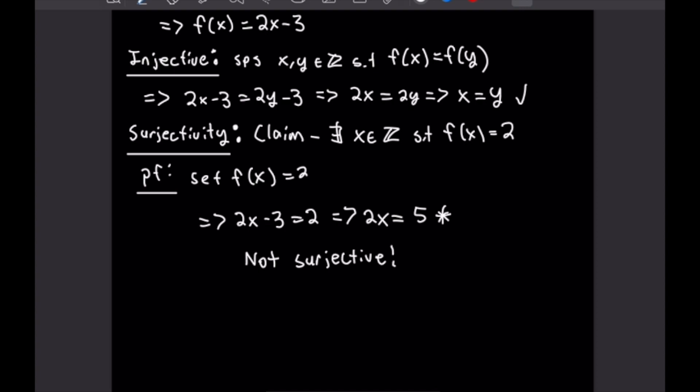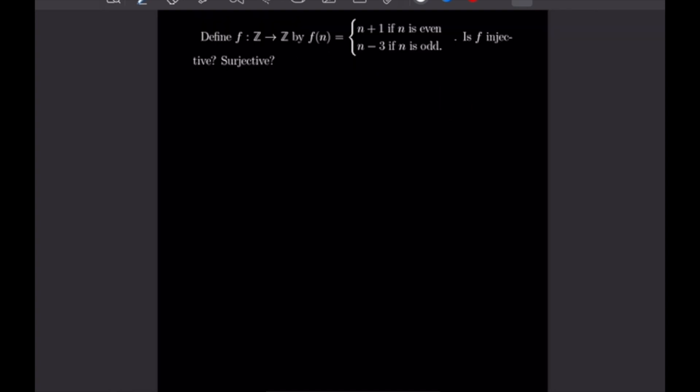So this function was injective, but not surjective. Let's go ahead and get into our next one. For this one, we have a piecewise function, which we have defined in the following way. We have a function from Z to Z, which is defined by f of n is equal to n plus 1 if n is even, and n minus 3 if n is odd.